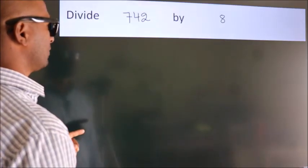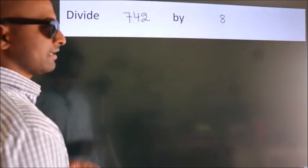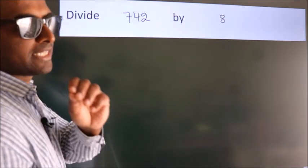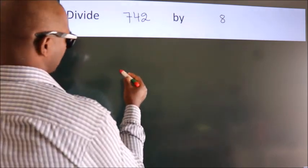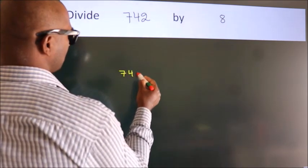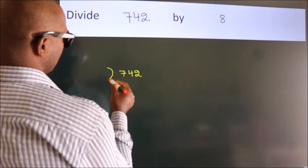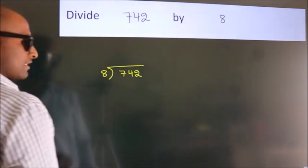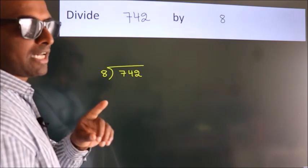Divide 742 by 8. To do this division, we should frame it in this way: 742 here, 8 here. This is your step 1.